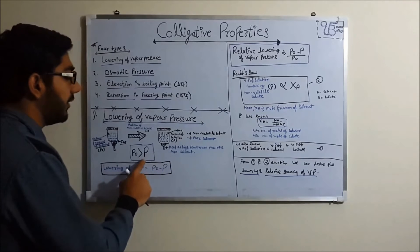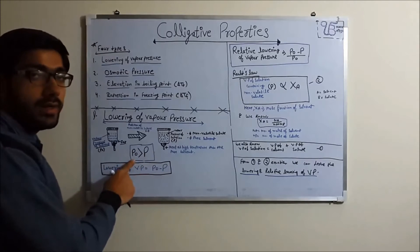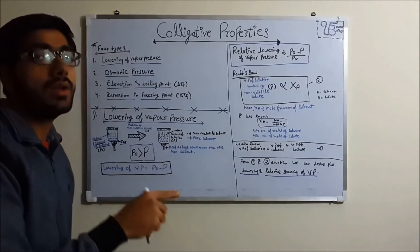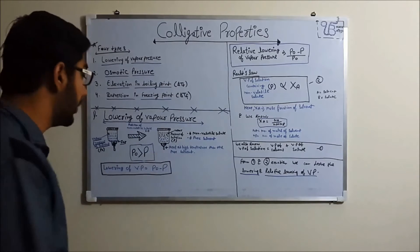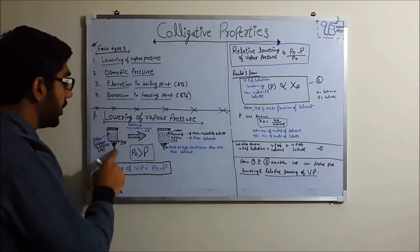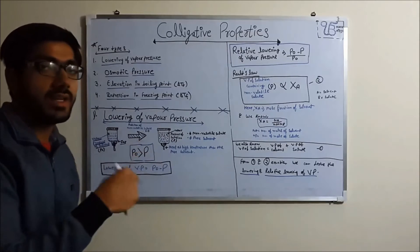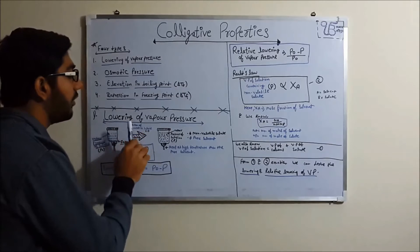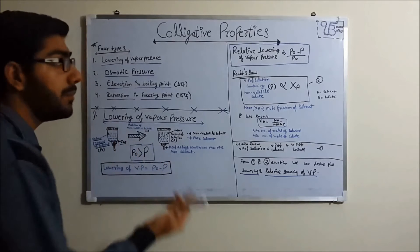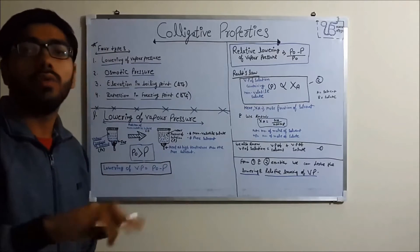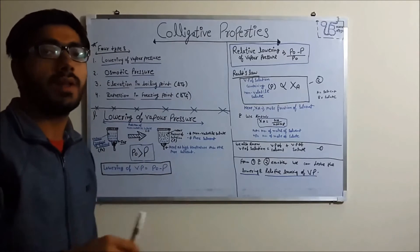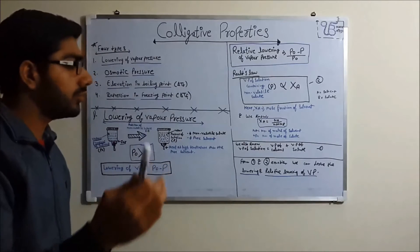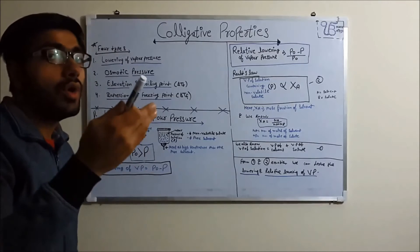We know that vapor pressure of pure solvent is greater than the vapor pressure of pure solution. When you heat it, vapor pressure increases for pure solvent. But when you add a non-volatile solute to the pure solvent — solute plus solvent equals solution — the vapor pressure of the solution decreases.